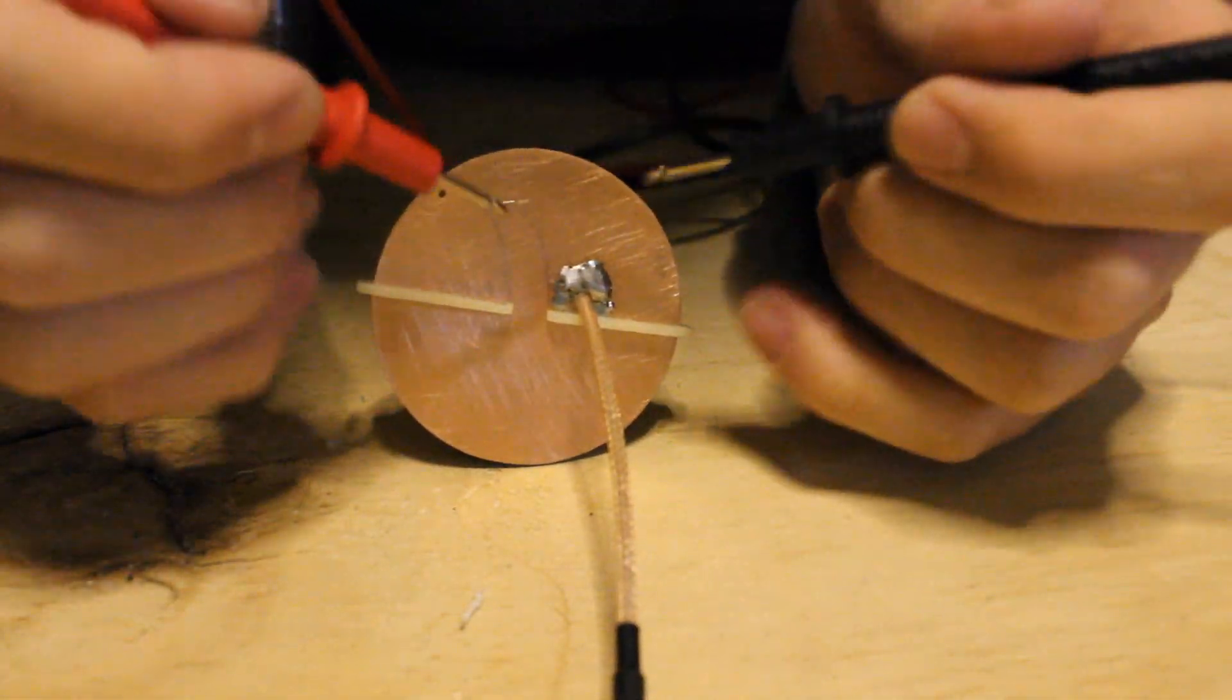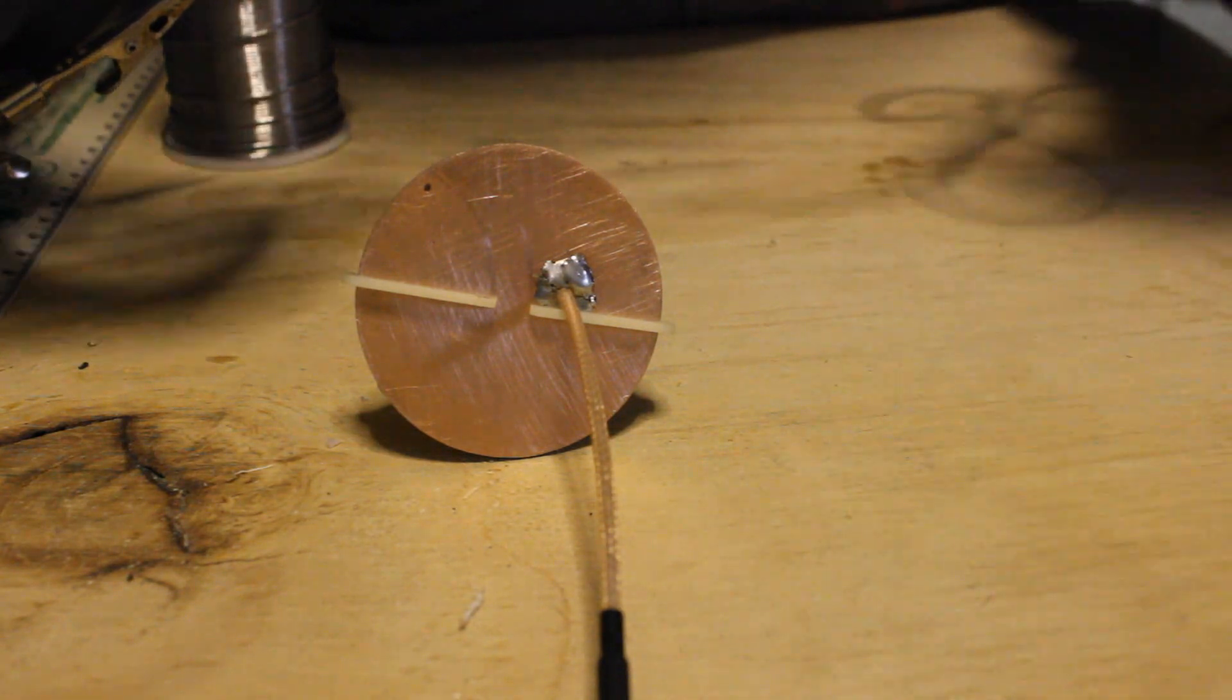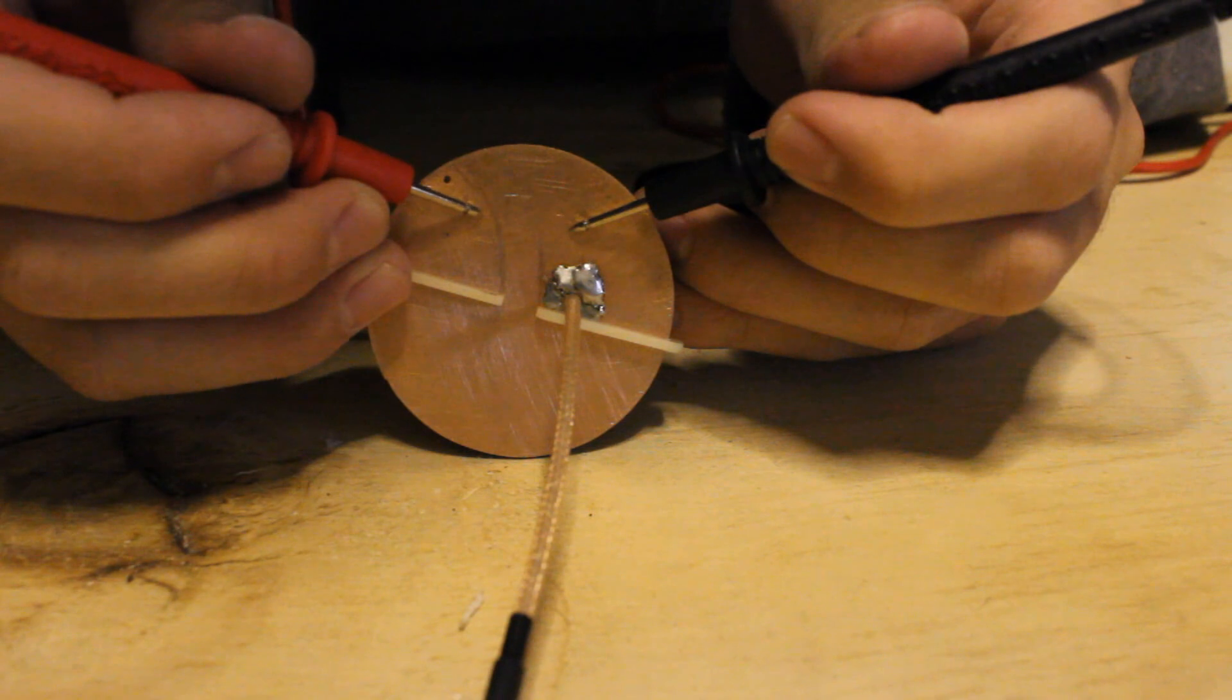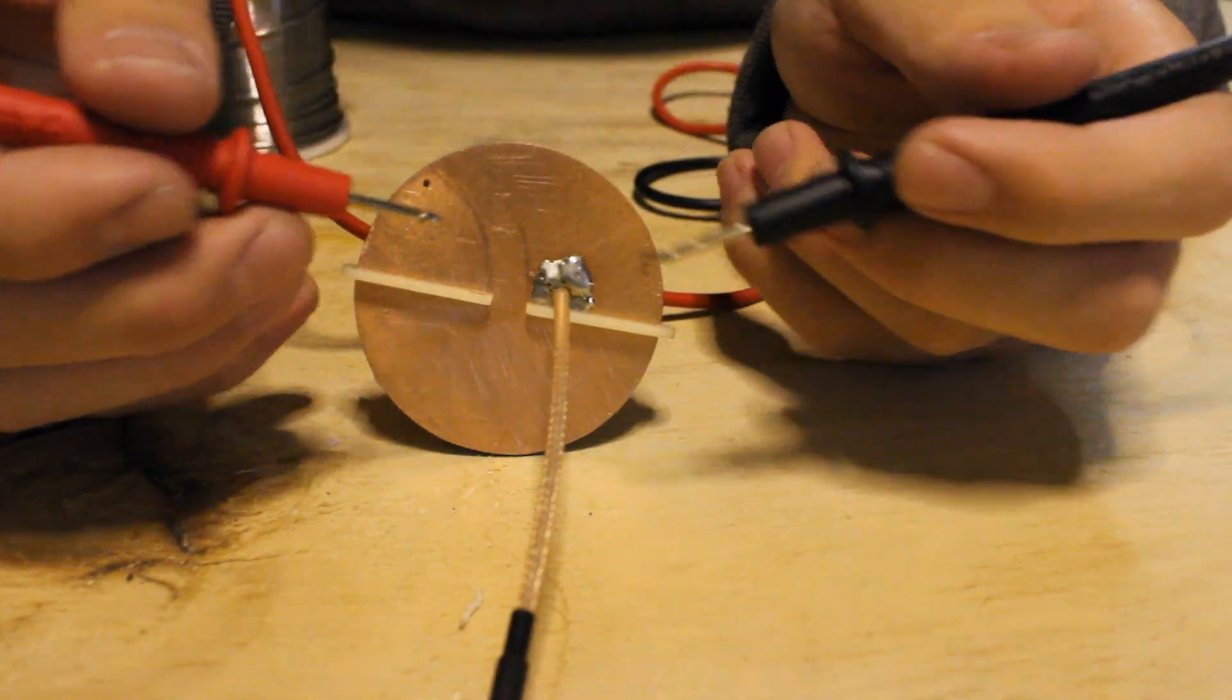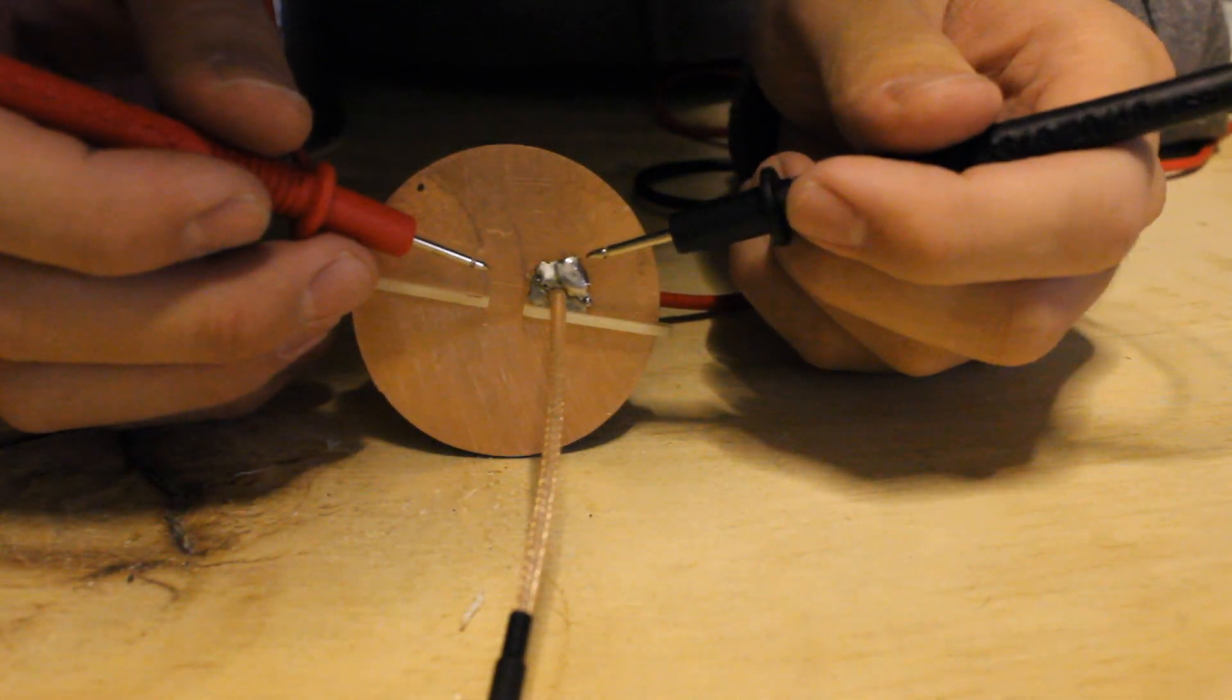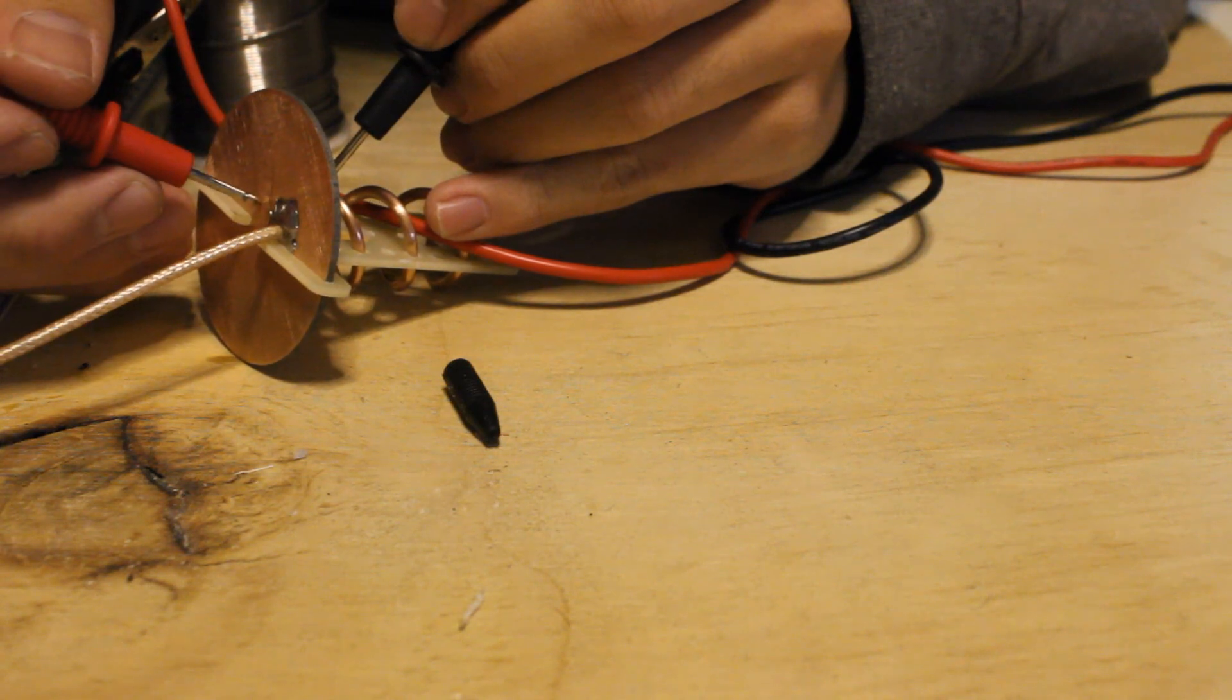If I touch the black lead over here and the red lead over here, oh there we go, that's the continuity test. So touch it on the same plate, yeah, so pretty much if you touch it on the same plate you're gonna get a beep because the electricity could flow.